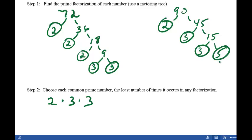Now we look at the next factor. We see that 5 occurs 1 time in the factorization of 90, and 0 times in the factorization of 72. So the least number of times it occurred was 0, so we include 0 factors of 5.